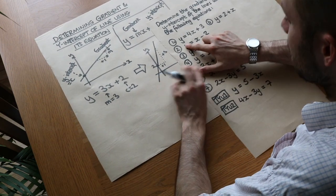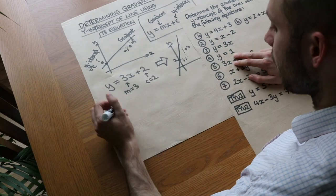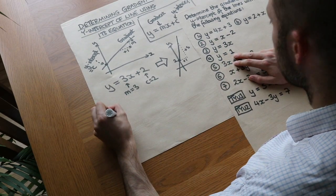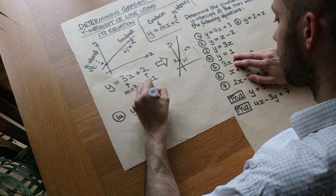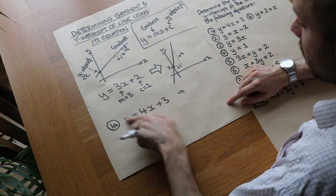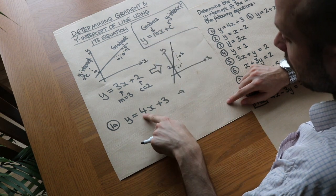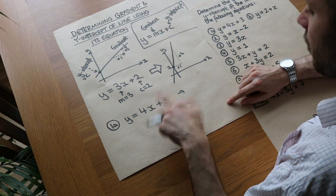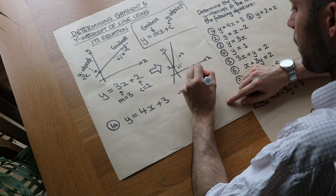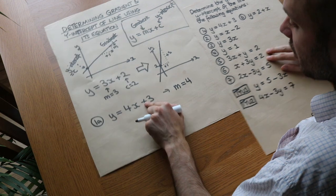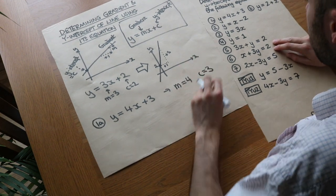Let's try some questions — we want to find the gradient and y-intercept of each. So let's do 1a: we've got y equals 4x plus 3. This one is easy because we've already got it in that particular form. We can just read off the coefficient of x — the number in front of it is 4, so the gradient m is 4. And that constant term, the number on its own, is the y-intercept, so c is equal to 3.